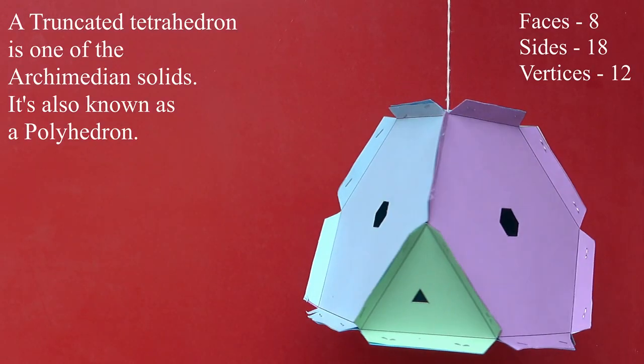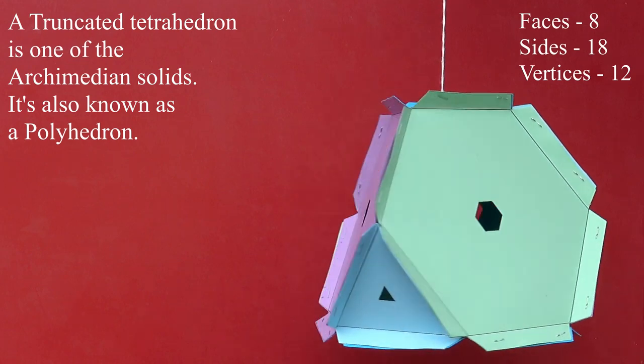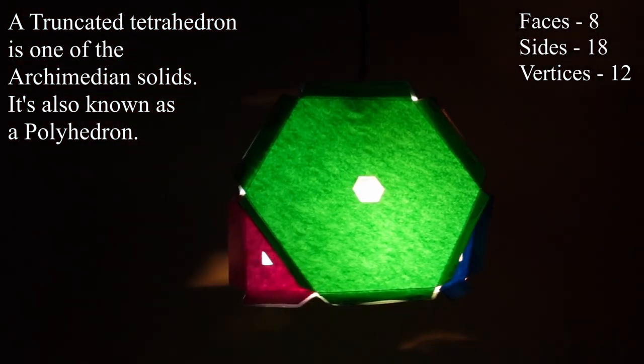This truncated tetrahedron has 8 faces, 18 sides, and 12 vertices.